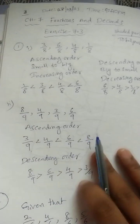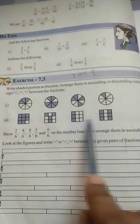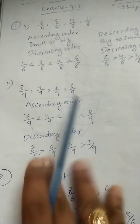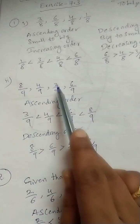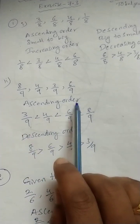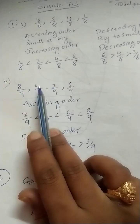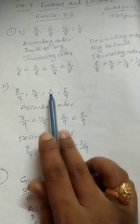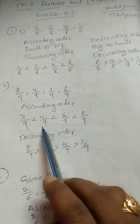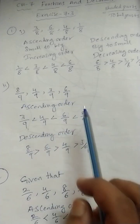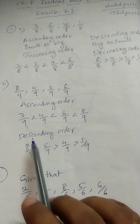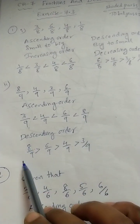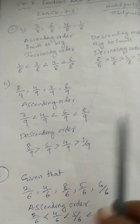Next is the second bit. See the figures given now. These are all shaded by total parts I wrote here: first figure 8 by 9, second figure 4 by 9, third figure 3 by 9, fourth figure 6 by 9. Ascending order means small to big. Among these four numerators, 3 is the smallest. So: 3 by 9, next 4 by 9, next 6 by 9, next 8 by 9. Now for descending order — just reverse: 8 by 9 greater than 6 by 9 greater than 4 by 9 greater than 3 by 9.